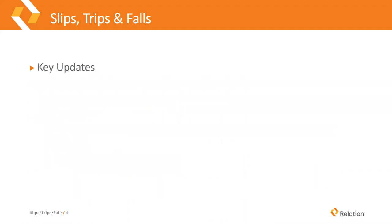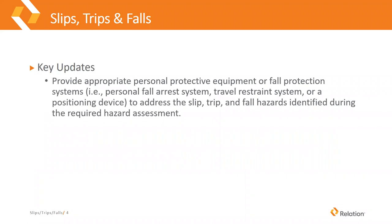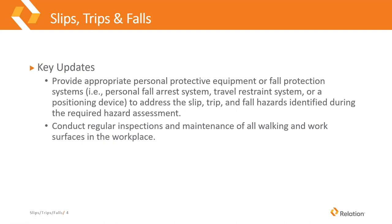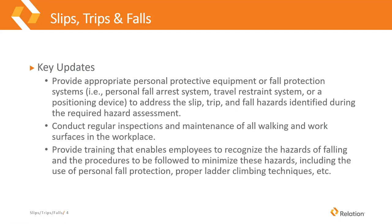A couple other updates: employers are to provide appropriate personal protective equipment or fall protection systems to address the slip, trip, and fall hazards identified in the required hazard assessment. Employers are also to conduct regular inspections and maintenance of all walking and working surfaces in the workplace, and to provide training that enables employees to recognize the hazards of falls and the procedures to be followed to minimize these hazards — including the use of personal fall protection, proper ladder climbing techniques, the type of shoes to be wearing, and how they're supposed to be cleaning things up.